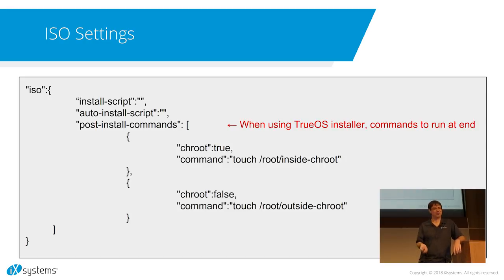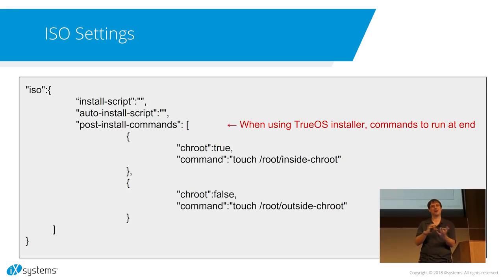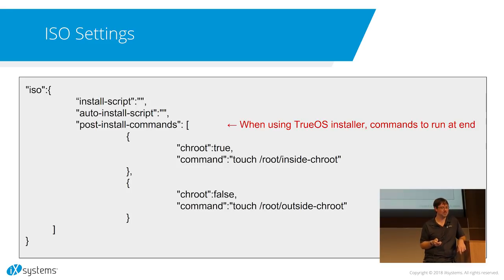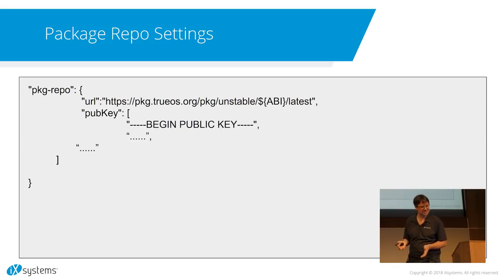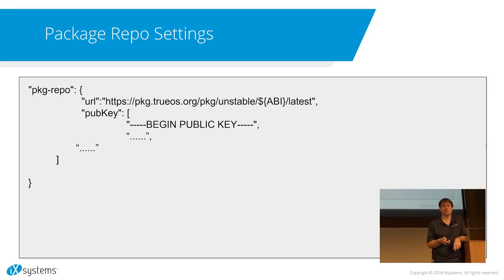We needed the ability to add post-install commands to the installer. For Plasma, after the install is done, we still want to check for NVIDIA cards and load the right driver. We can run commands inside the chroot of the installed system, and also outside on the actual ISO for scripts that need to grab components and touch inside the chroot. And if you're going to publish packages, you can now add the package repo in the manifest — the repository, the key, the information splatted on the installed system so PKG works out of the box.